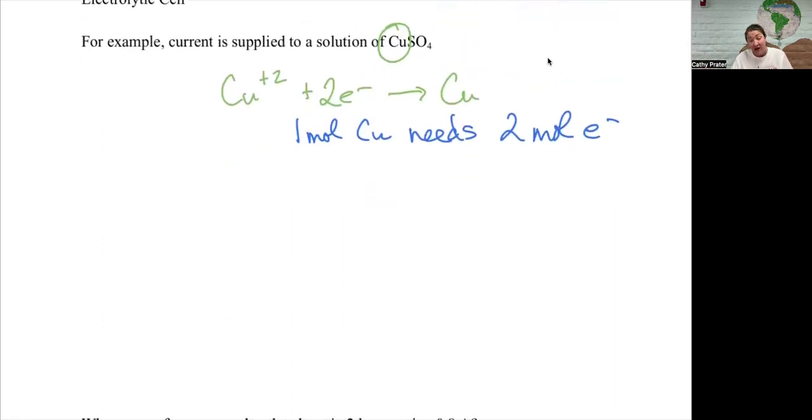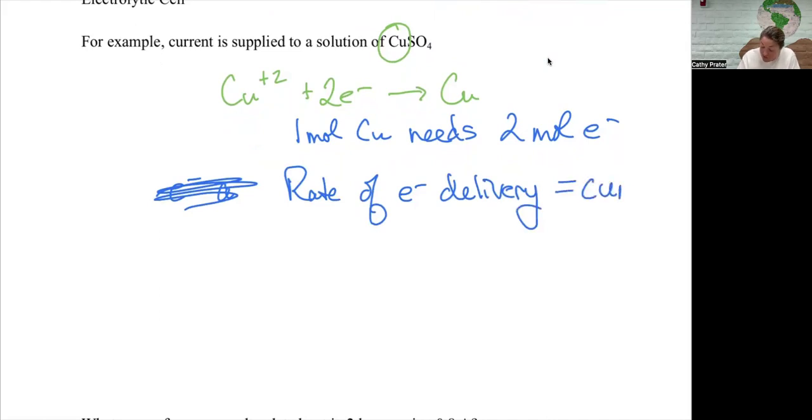The way that we quantify the electrons is the rate of electron delivery. How fast the electrons are coming out of the wire is going to tell us what the current is. So current is how much charge is delivered per unit time. Typically it's in coulombs per second. The units of currents are amps. And amps are equal to one coulomb per second.